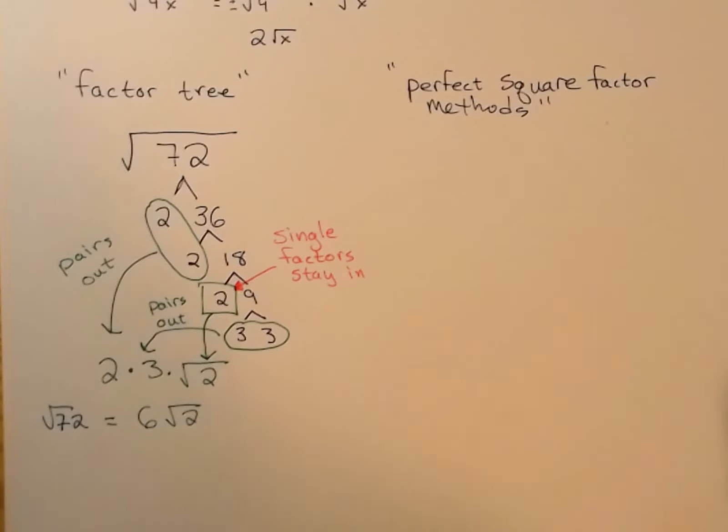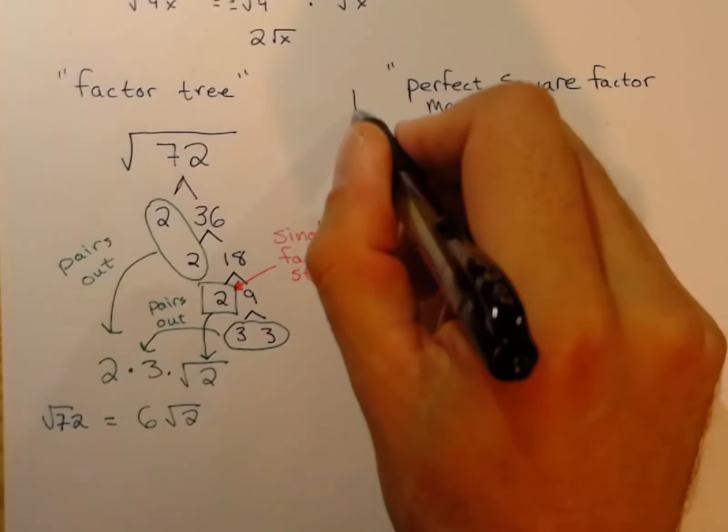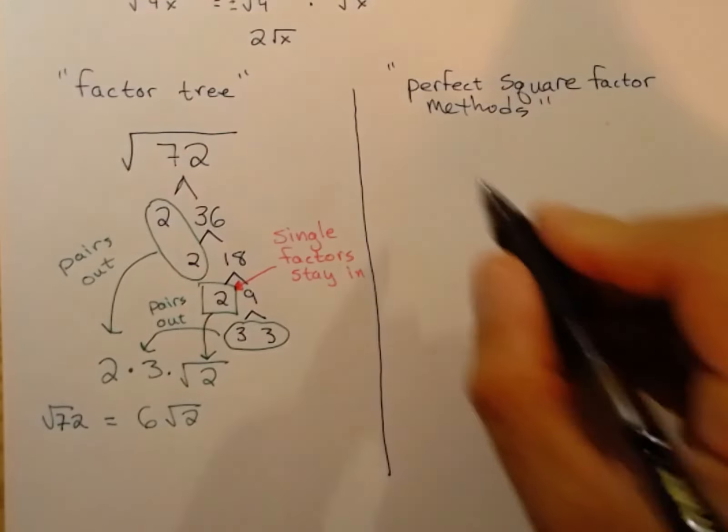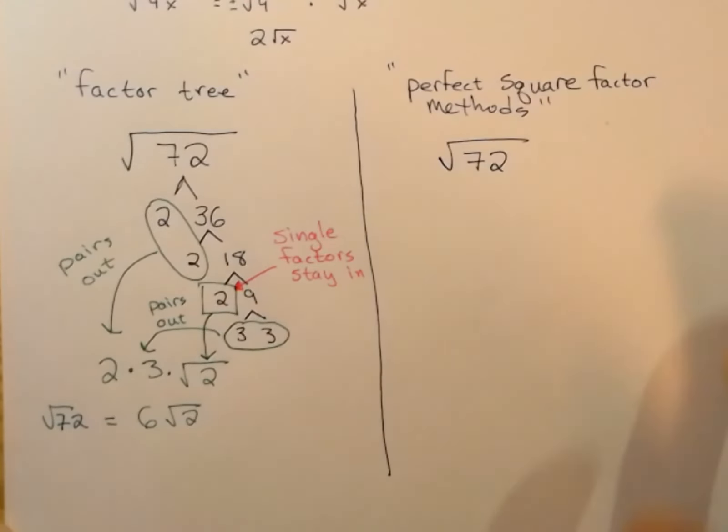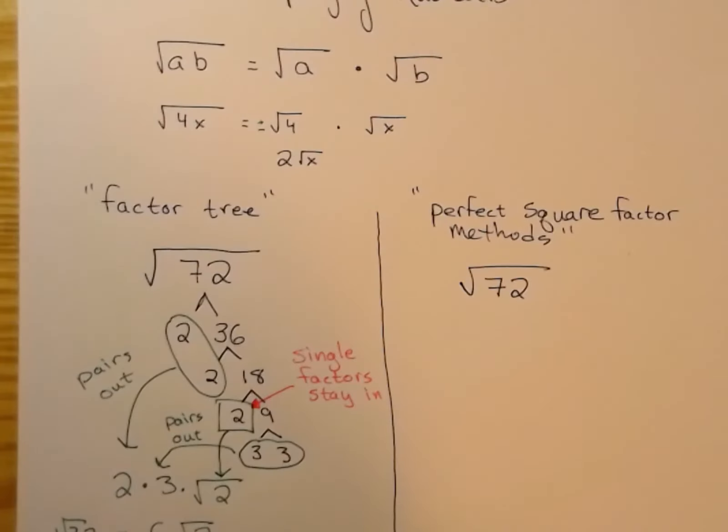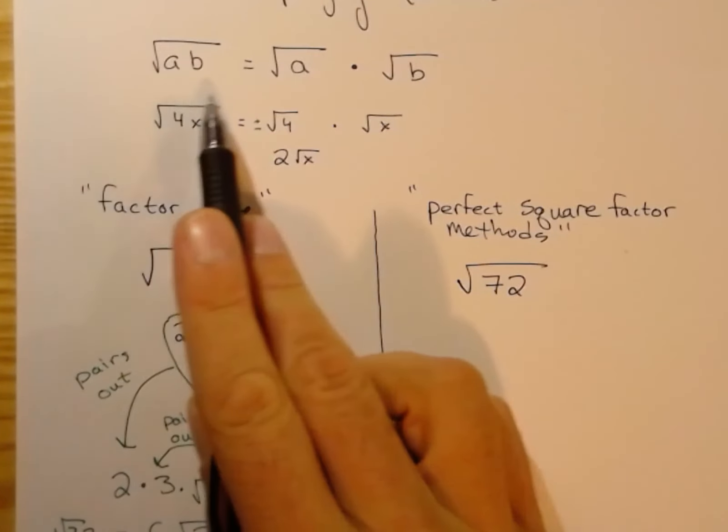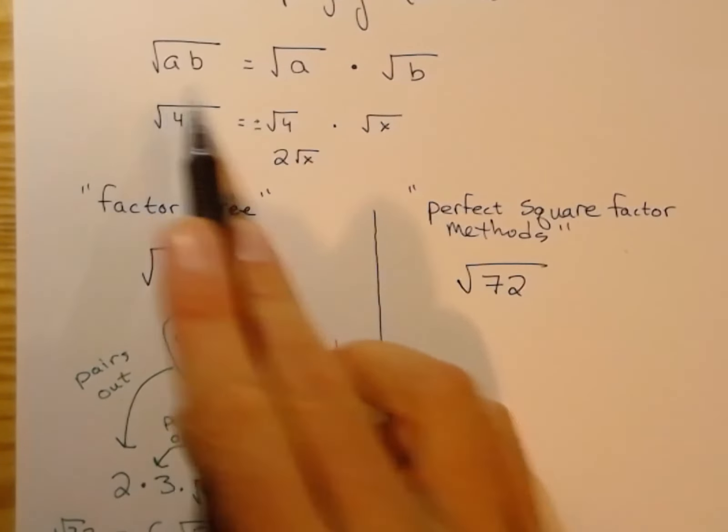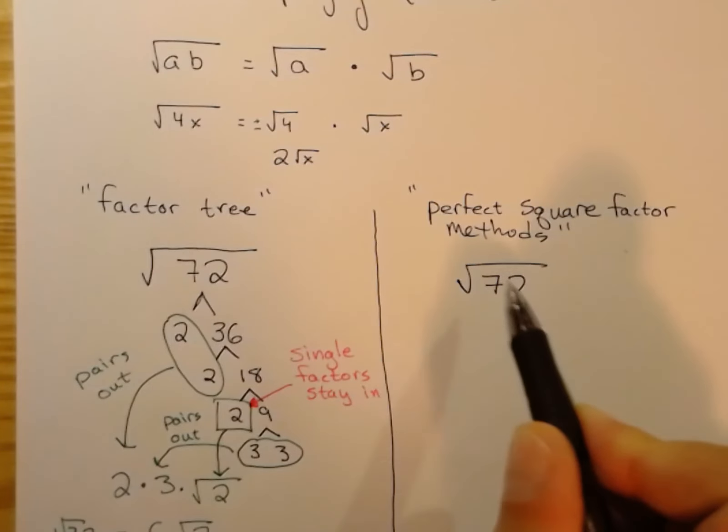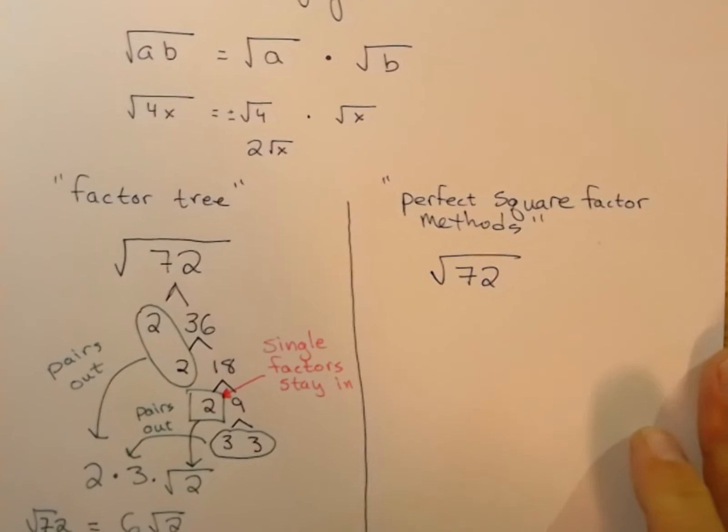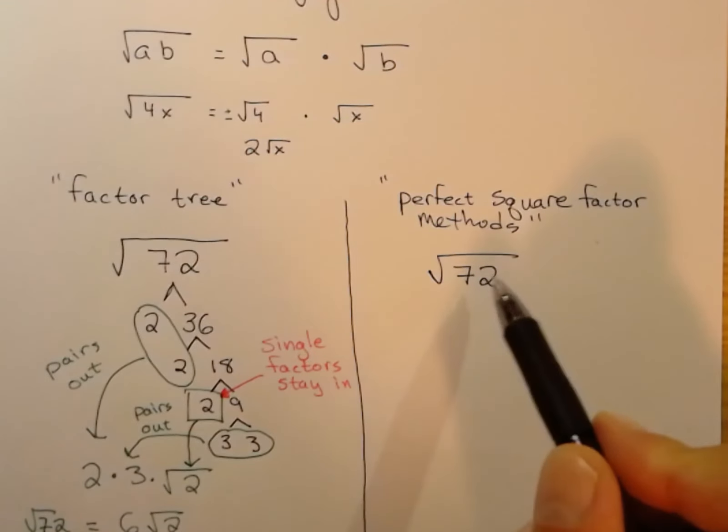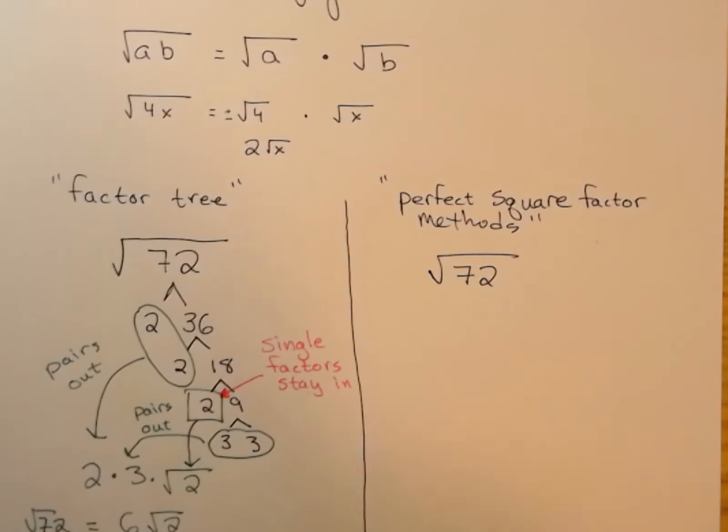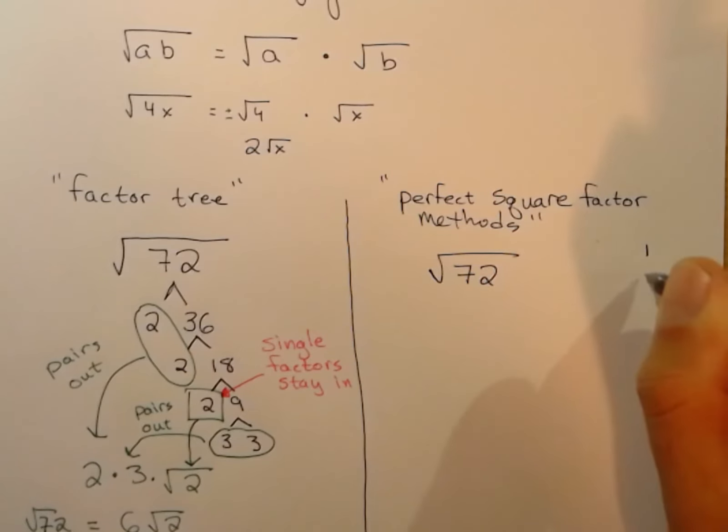The perfect square method is a little bit quicker. We use the same example. In the perfect square method, we're just going to use this result directly. And we're going to look for, are there any perfect squares that are factors of this number.